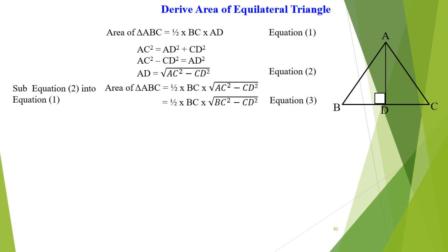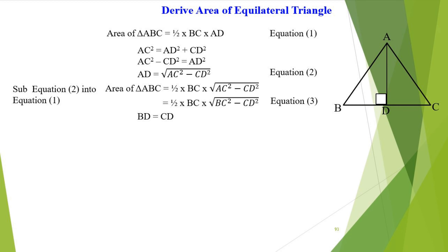For AC squared, it is also equal to BC squared, because in an equilateral triangle, AC is equal to BC in length. So this results in the area of triangle ABC equals half times BC times the square root of BC squared minus CD squared.